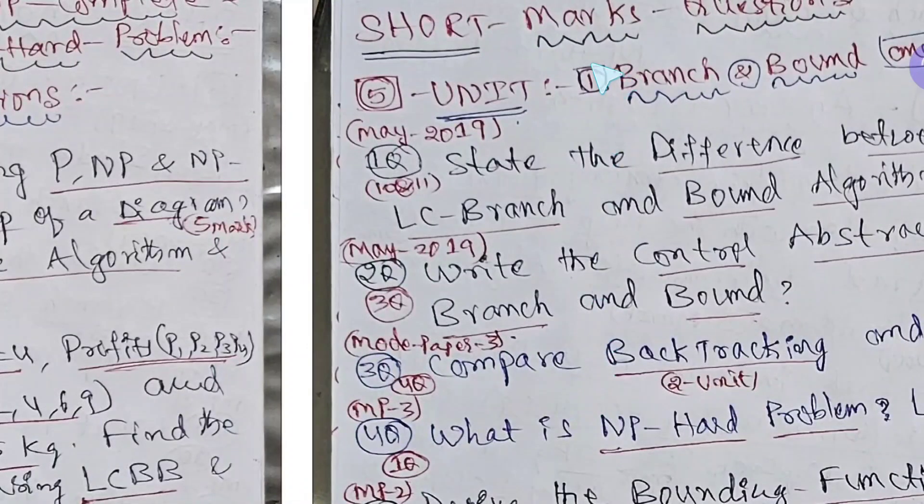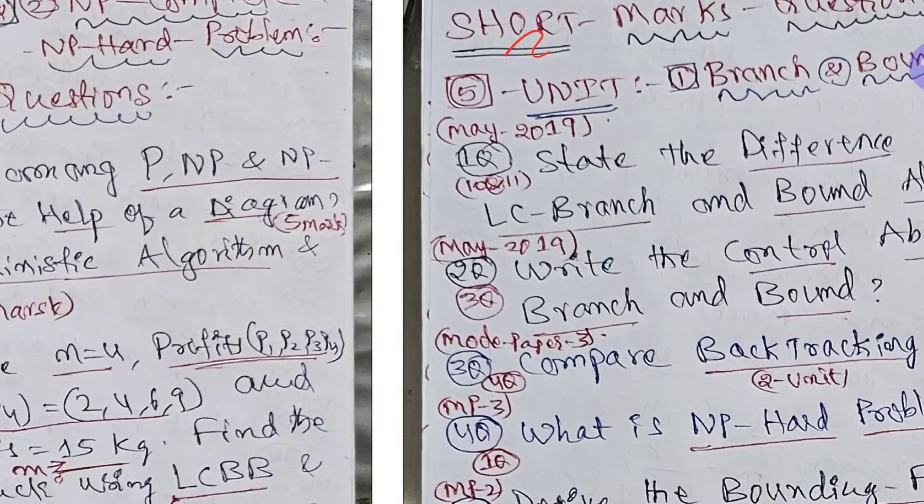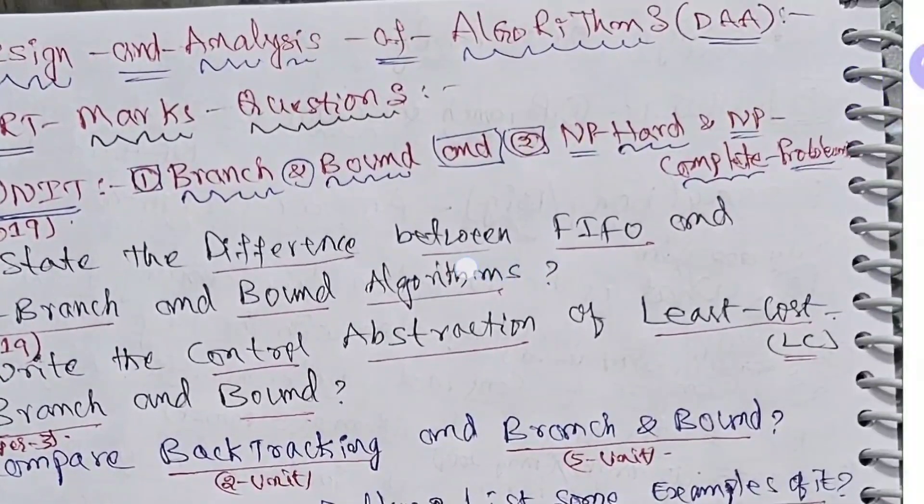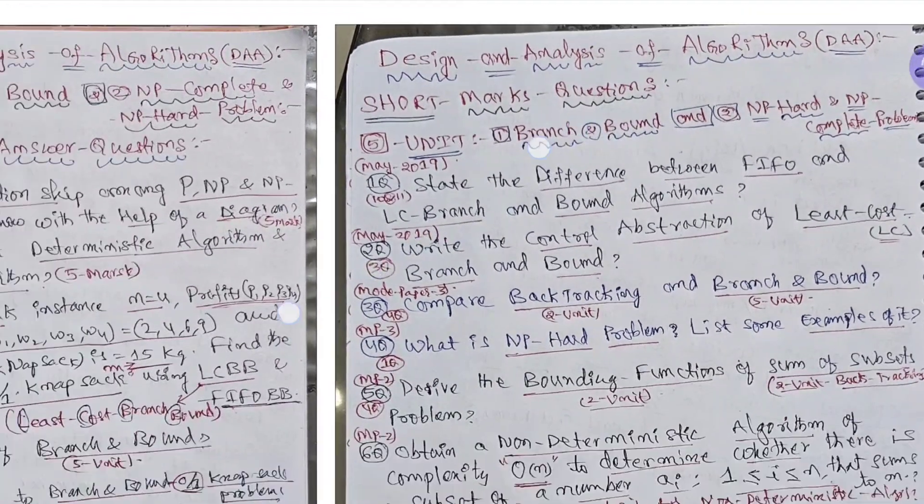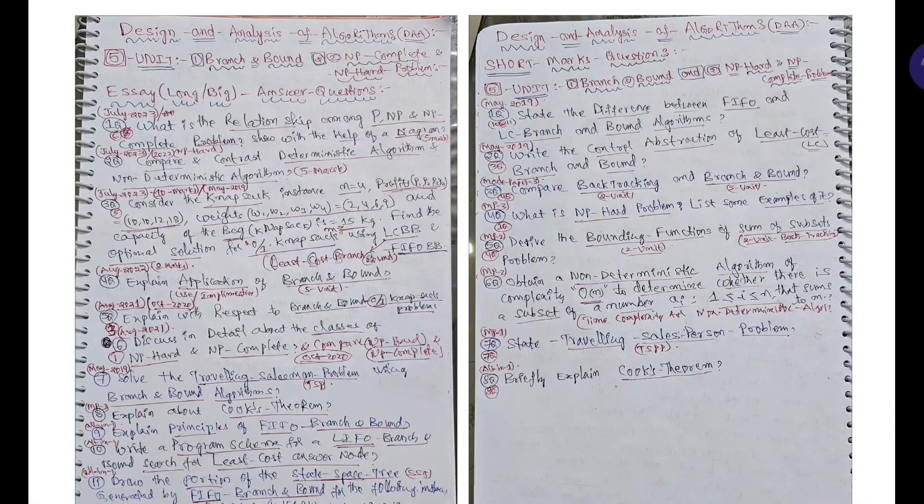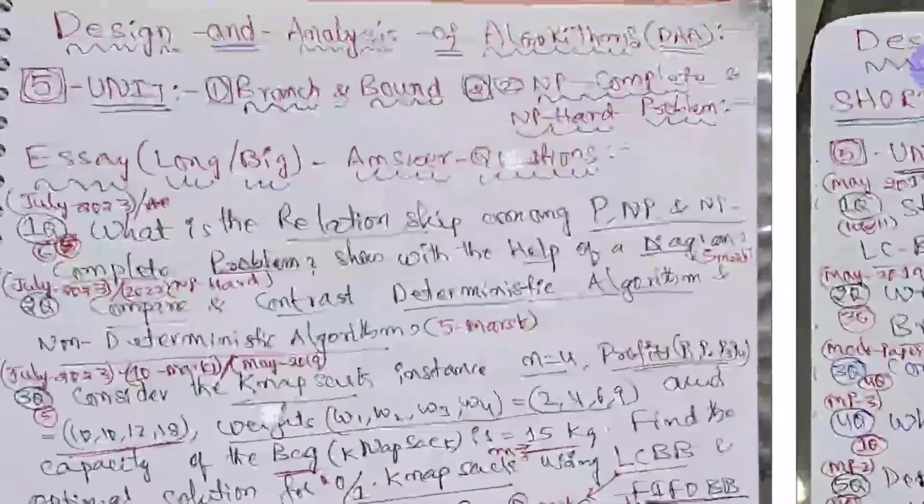This side and right side we are having short answer questions. See here, short answer question fifth unit, branch and bound, and we are having two chapters here. Branch and bound and NP-hard and NP-complete problems. So concentrate on this and you will get direct question from fifth unit. If you prepare like this smart work, you can easily get more than first class.